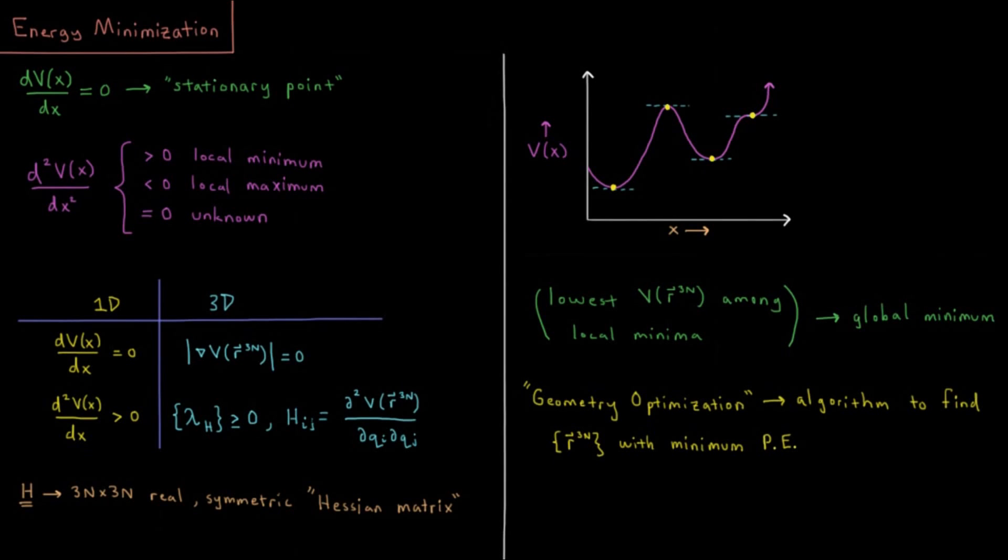This video will discuss energy minimization in computational chemistry. We were discussing our potential energy function and the potential energy gradient in the previous video. So we might imagine we have some potential energy function V of x where our structural coordinate is x that we can vary and then our energy as a result is this kind of purple function here.